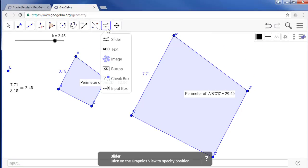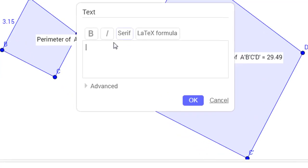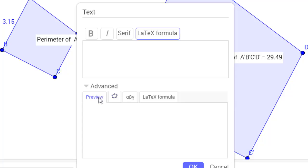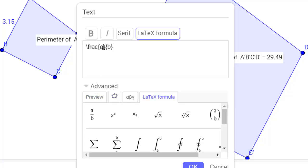So grab your text tool and let's go to a LaTeX formula. In advance, we want to choose the fraction again. In the first fraction, let's call this perimeter and then use two spaces, polygon A prime, B prime, C prime, D prime. And in place of B, copy this, save myself some typing.